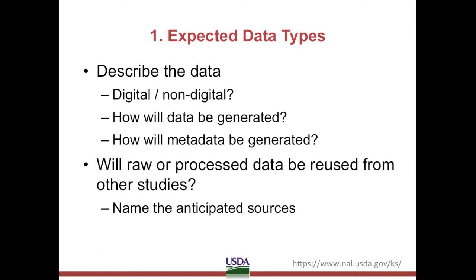For example, you may be collecting environmental data from real-time sensors or images from phenocams. You may be conducting interviews with digital video and audio recordings and subsequent digital transcriptions. You may have field notebooks from crop management experiments or field trials that are not born digital. You may be generating sequence data for whole genomes or metagenomics. In the course of analysis or modeling, you may be creating customized computer code or scripts for transformation or data cleaning. Metadata describing the data you have collected should be recorded for each experiment, each physical sample, or be embedded in the files produced by the sensors or sequencing machines. Describe whether any raw or processed data will be reused from other studies, and if so, name the anticipated sources.